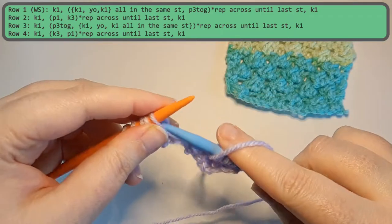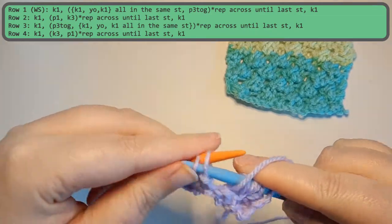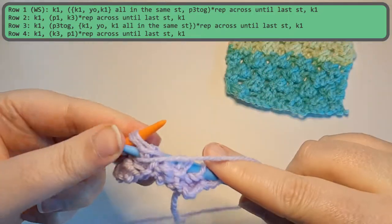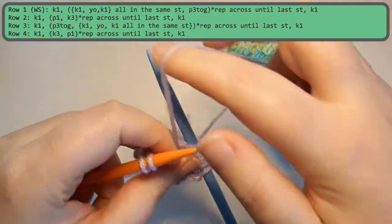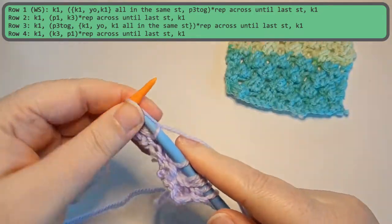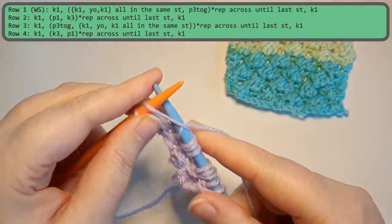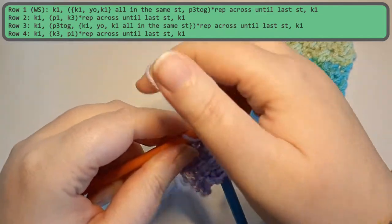Again the repeat is going to be purl three together. And then knit one, yarn over, and then knit one all within the same stitch. And then we finish out the row with a knit.